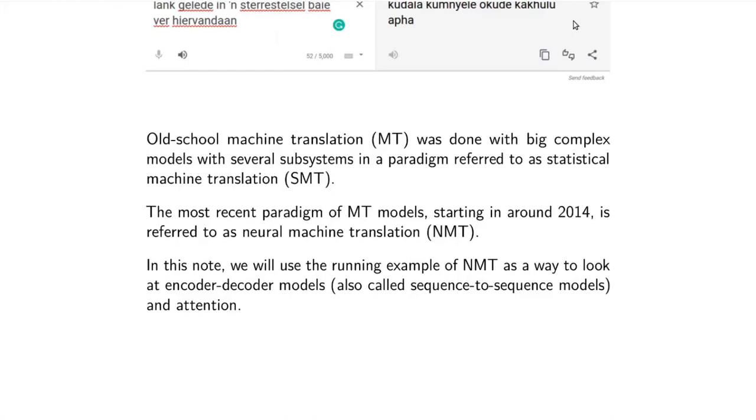And then in around 2014, neural models really started to pick up and they kind of distinguished between this current wave of models by calling them neural machine translation models, NMT. So if you see NMT, you know it's neural models to distinguish them from what came before, which was SMT. And we will use NMT as our kind of case study to look at encoder-decoder models and attention. Encoder-decoder models or sequence-to-sequence models are used for a lot more than just machine translation, but we'll look at the specific example of machine translation.